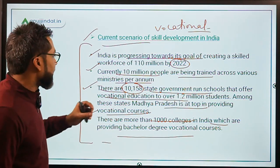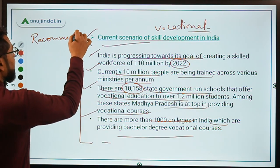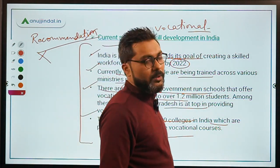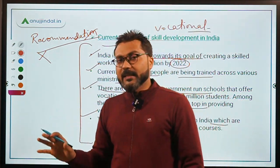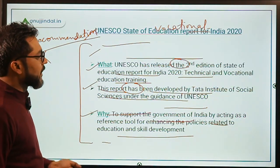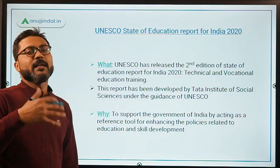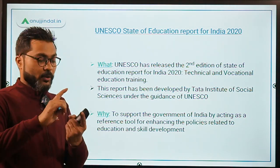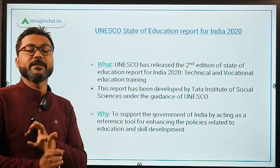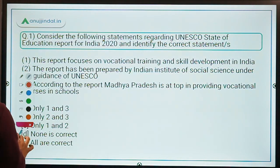The report also contains 10 recommendations, though these are not important for the exam. The three most important facts to remember are: the report was released by UNESCO, developed by the Tata Institute of Social Sciences, and it focuses on vocational education and training.